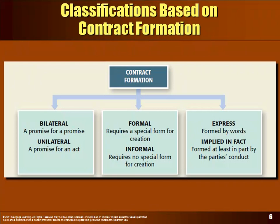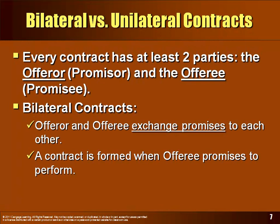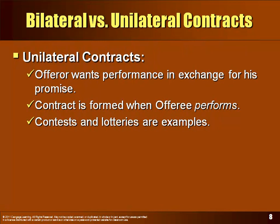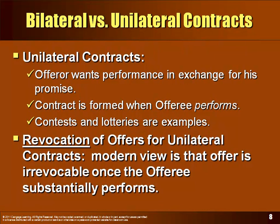The conduct of the parties can imply that there is a contract. A bilateral contract is a promise in exchange for another promise. Every contract has to have at least two parties — you don't agree with yourself. A unilateral contract involves a promise in exchange for an act. How is a lottery an example of a unilateral contract, and when is it formed?